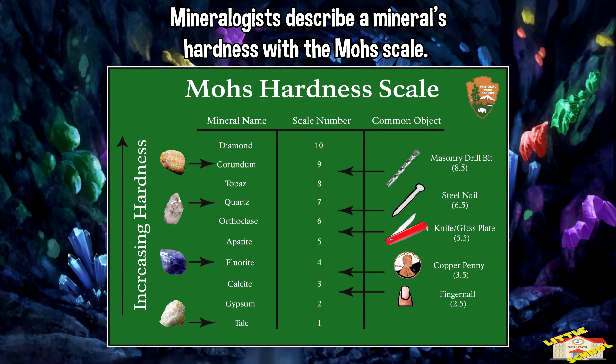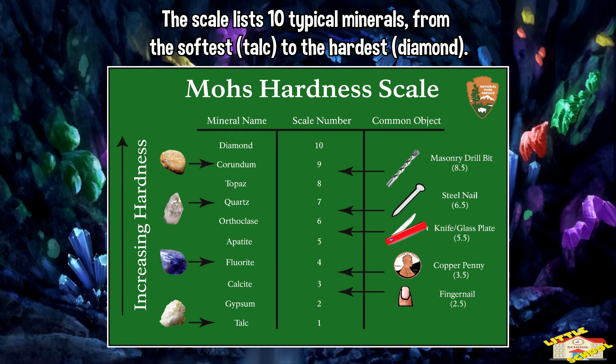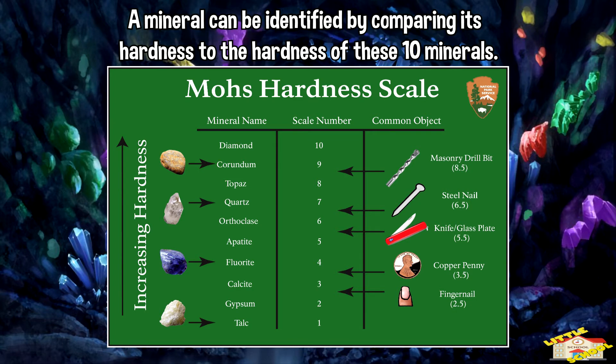Mineralogists describe a mineral's hardness with a Mohs scale. The scale lists 10 typical minerals from the softest to the hardest. Minerals can be identified by comparing its hardness to the hardness of these 10 minerals.